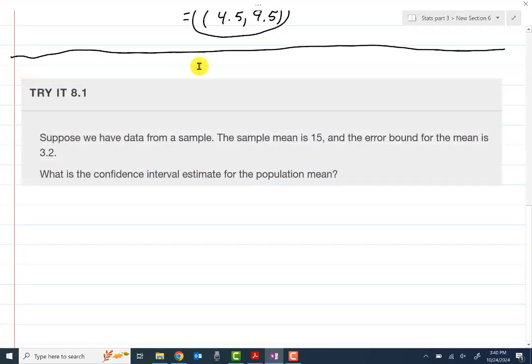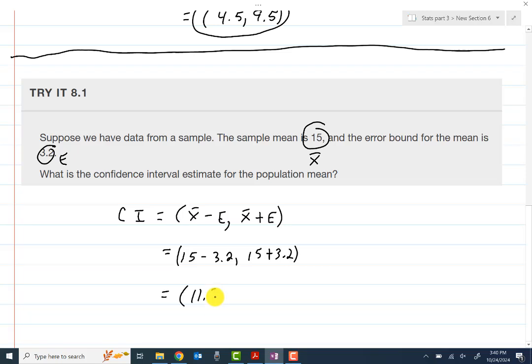Here's a quick extra one. The sample mean is 15, so that's our x-bar, and the error is 3.2. So our confidence interval is x-bar minus E, x-bar plus E, 15 minus 3.2 and then 15 plus 3.2. So you get 11.8 to 18.2.